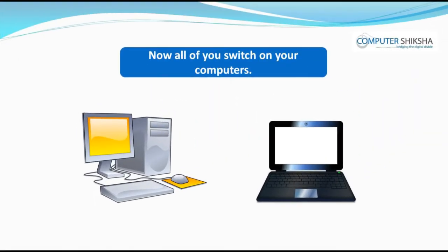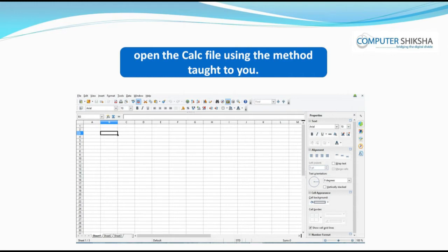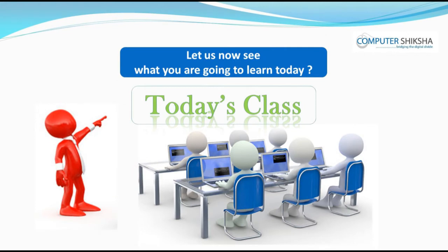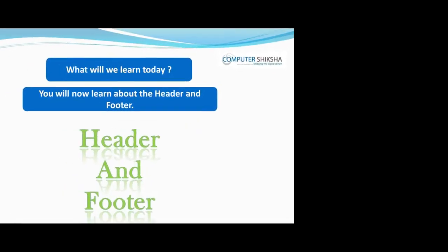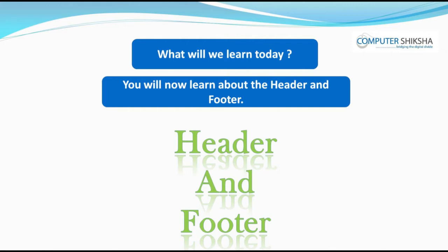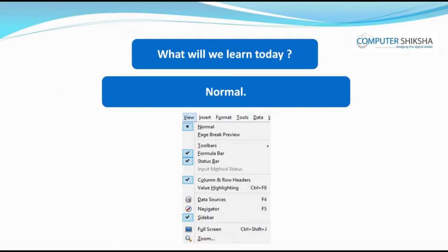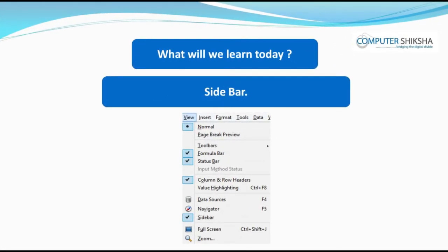All of you now switch on your computers and open the calc file using the method taught to you. Let us now see what you are going to learn today. First, you will make a table. You will now learn about the header and footer. Then, you will learn about some of the options of the View menu like normal, page break preview, toolbar, formula bar, status bar, column and row header, sidebar, and zoom.